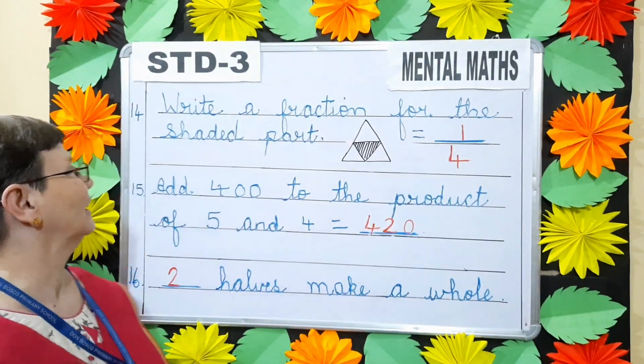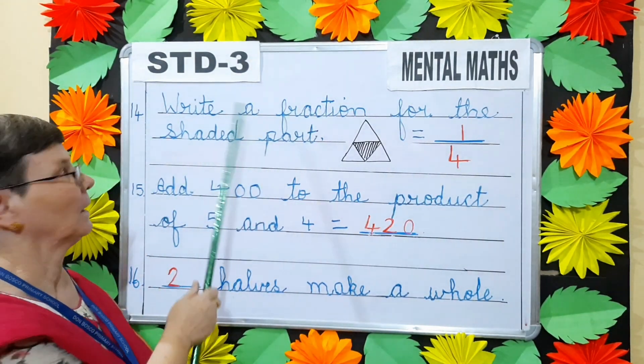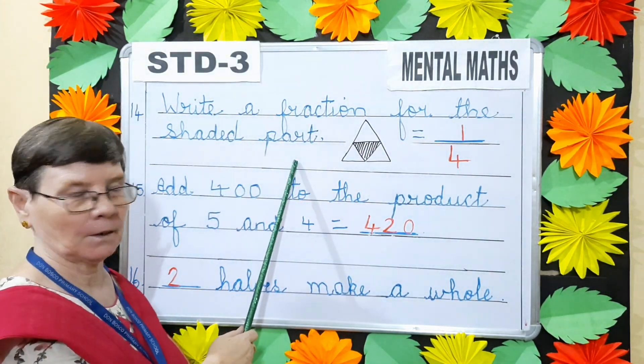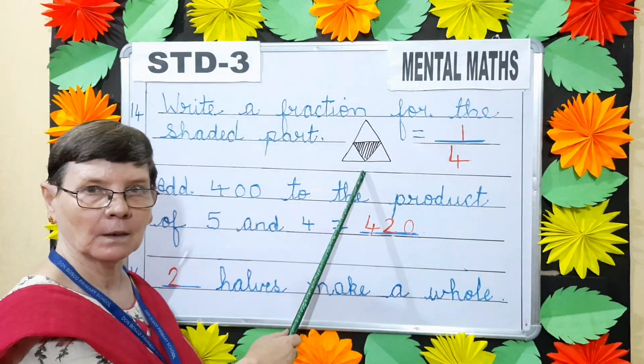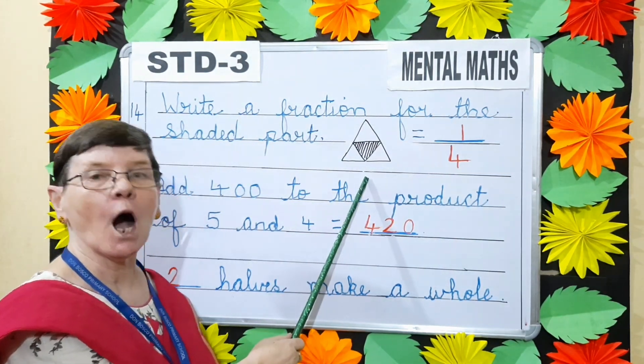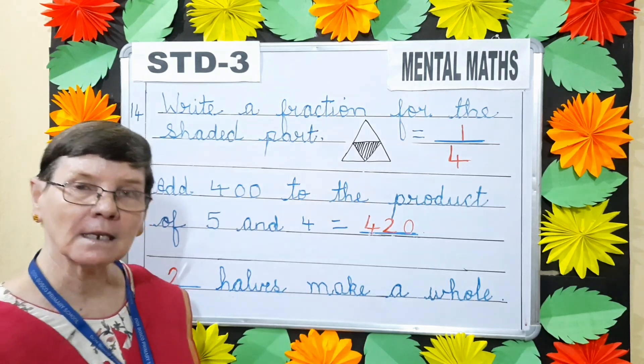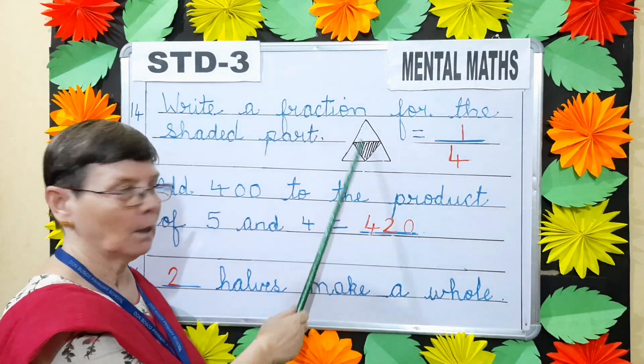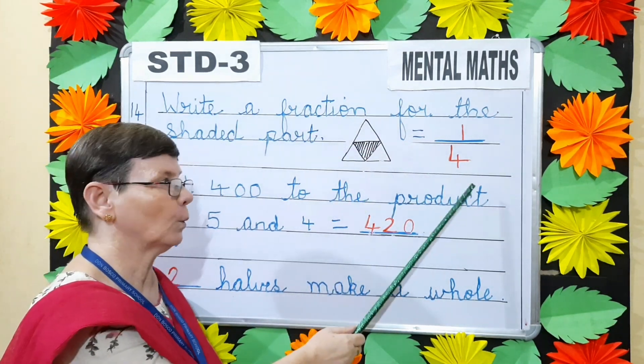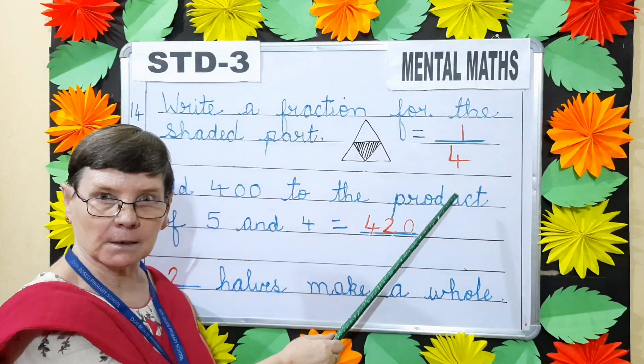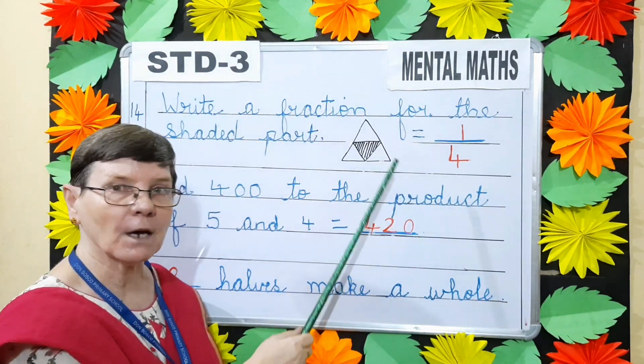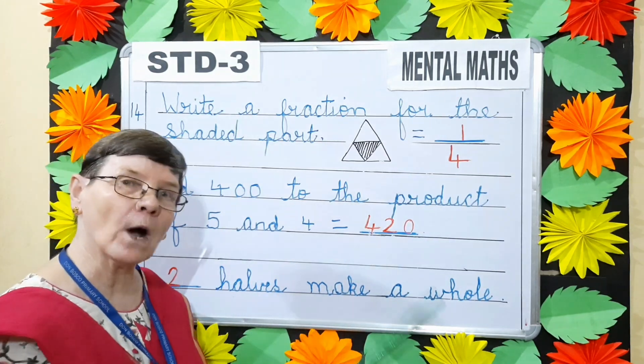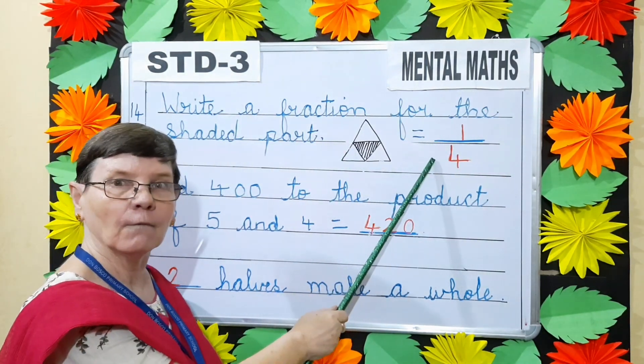Question number 14. Write a fraction for the shaded part. Now can you see this figure children? First we will count how many parts it is divided. 1, 2, 3, 4. Now divided into 4 parts. So 4 will be the denominator. Out of 4 parts, how many parts are shaded? Shaded or colored? Just 1 part. So it is 1 by 4.